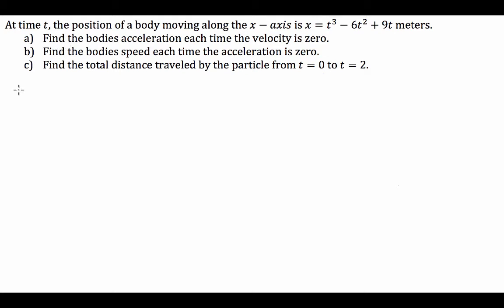For part A, we have to figure out when the velocity of this particle is equal to 0. Velocity in terms of time can be found by taking the derivative of a position equation, so we're looking at dx/dt.